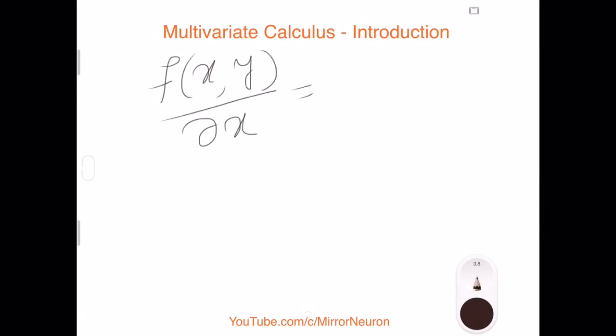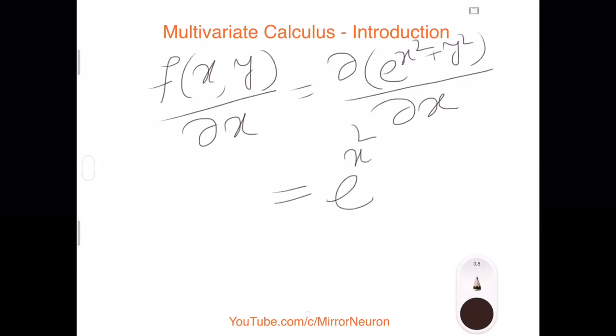So that means this becomes partial derivative of e to the power x square plus y square divided by with respect to x. And this would become e to the power x square plus y square times 2x.